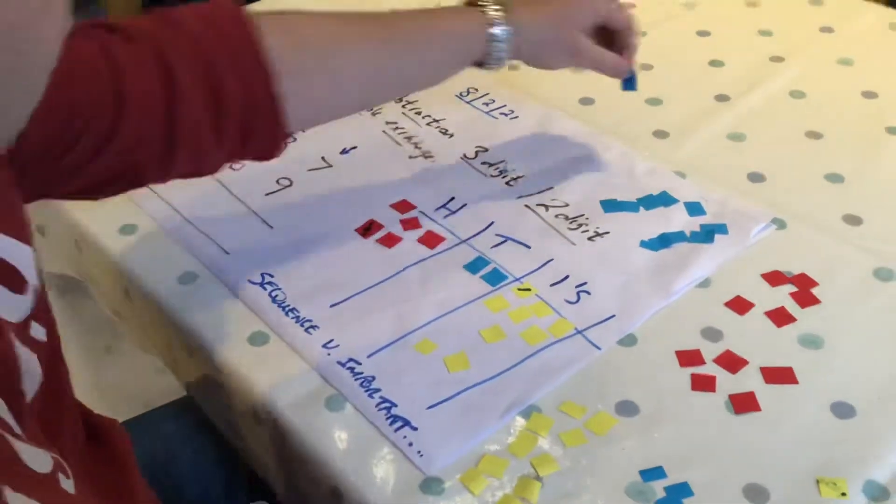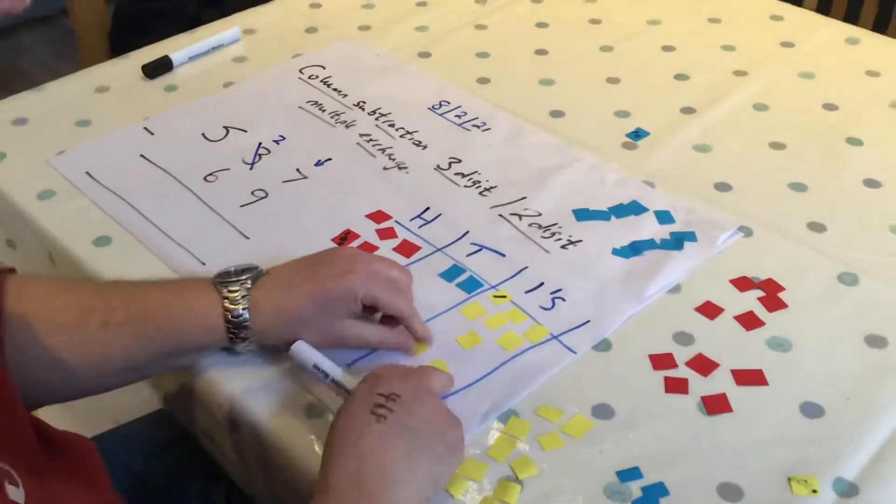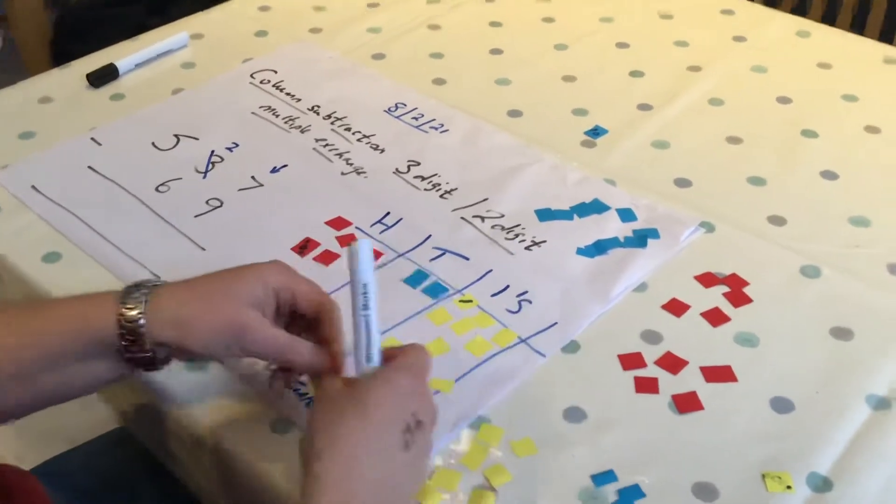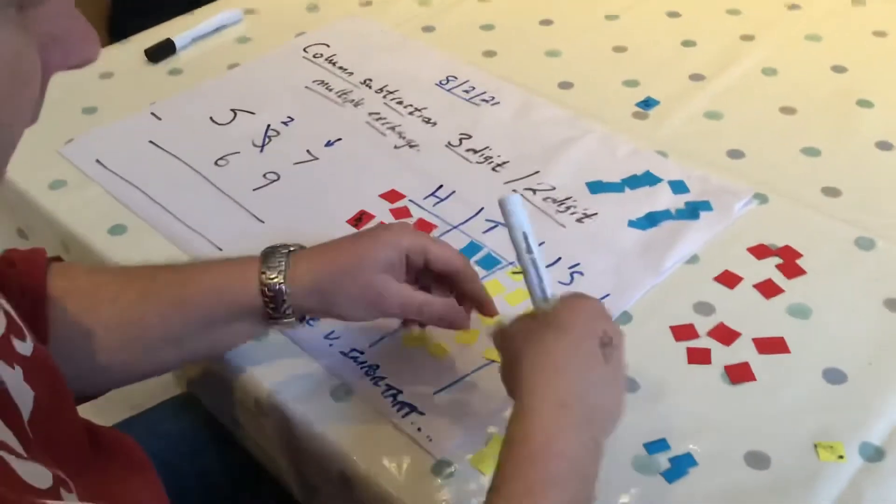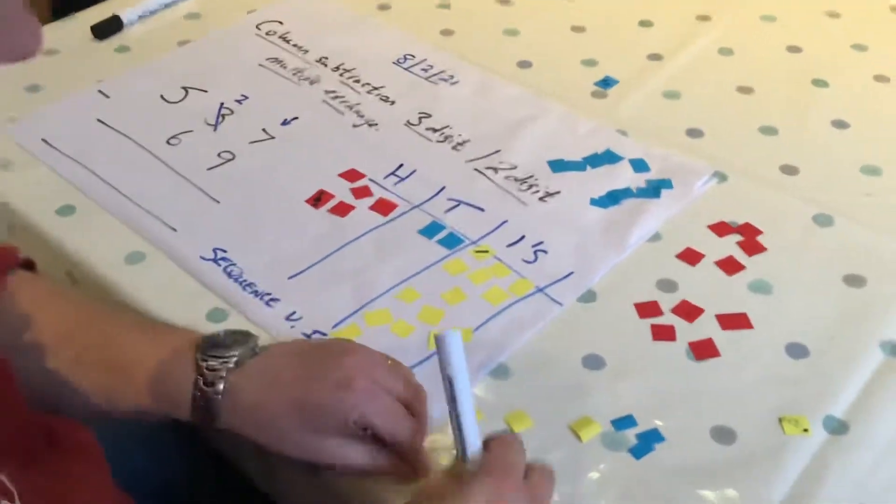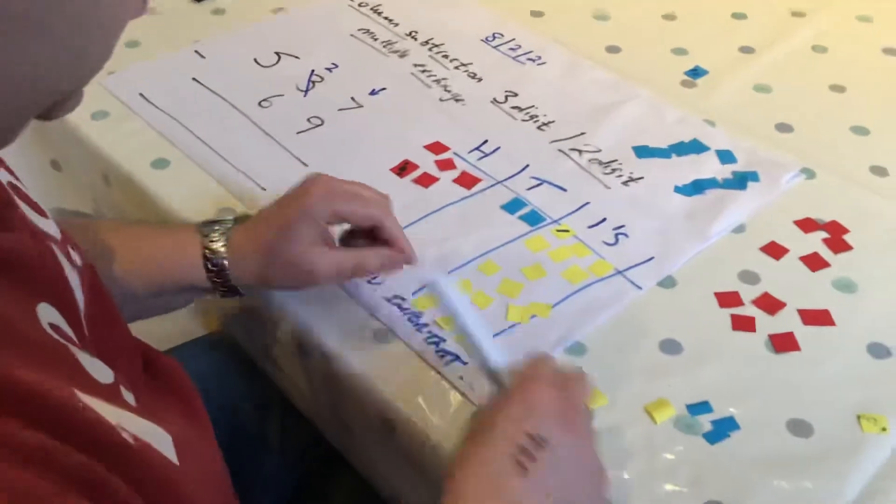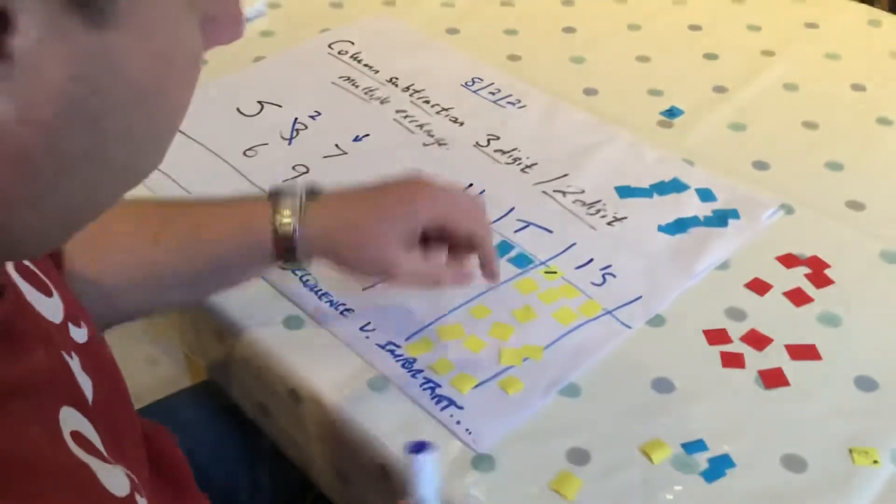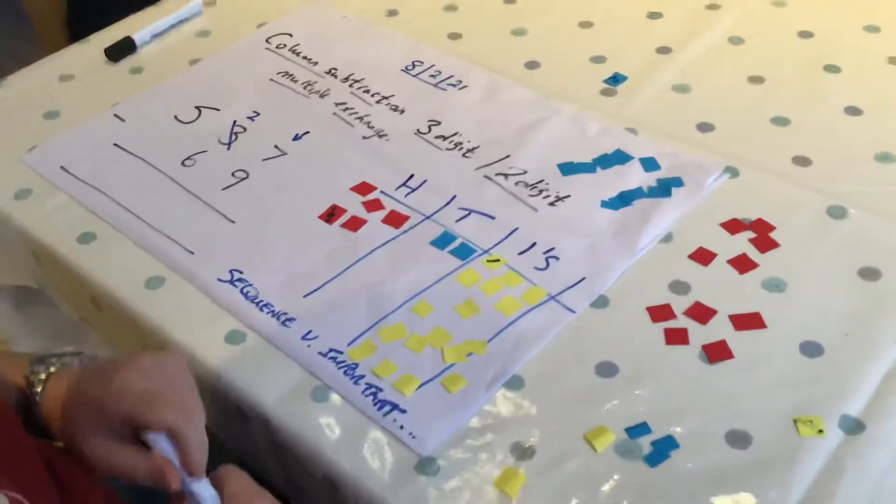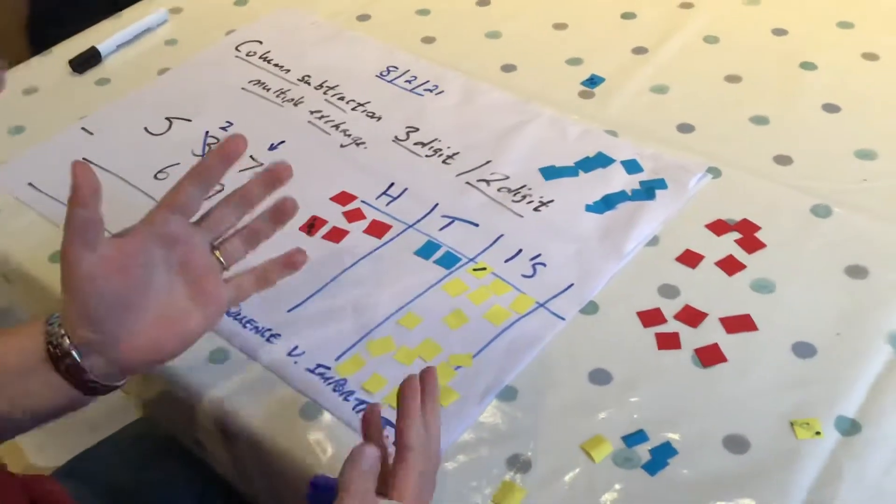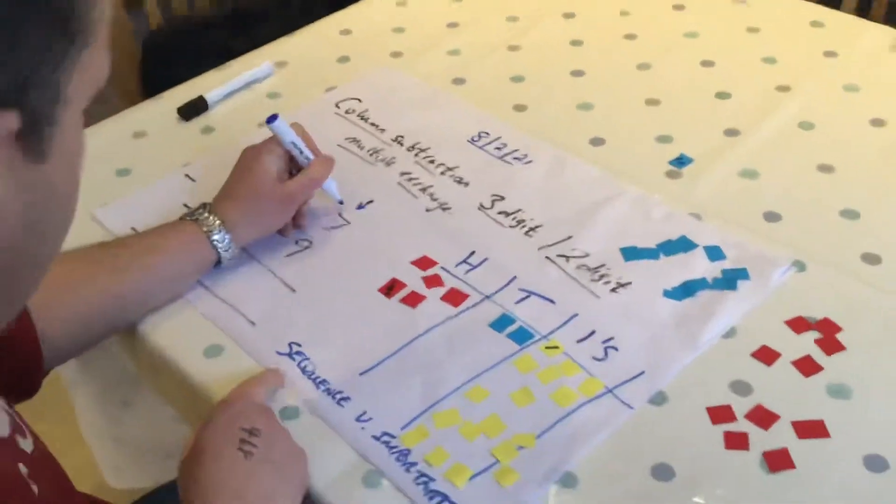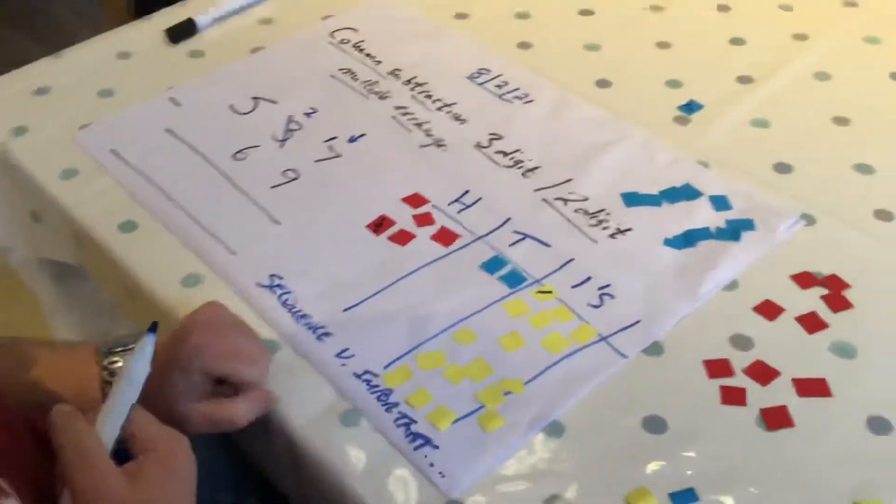I'm taking my one ten away from my tens column and I'm exchanging it for ten ones, because ten ones is ten. So there is three, four, five, six, seven, eight, nine, and ten. So now I have exchanged my ten from my tens column and I have exchanged it for ten ones. The values are the same.